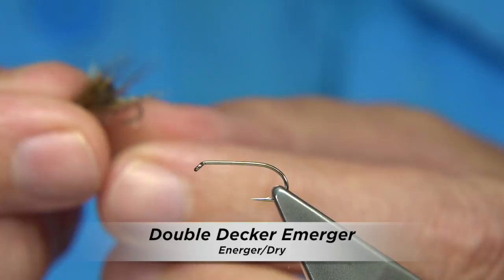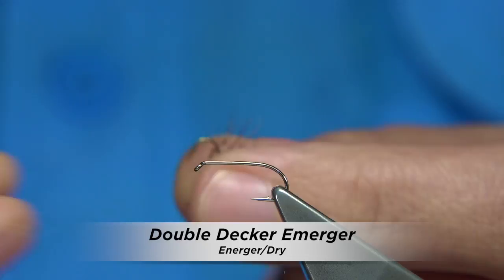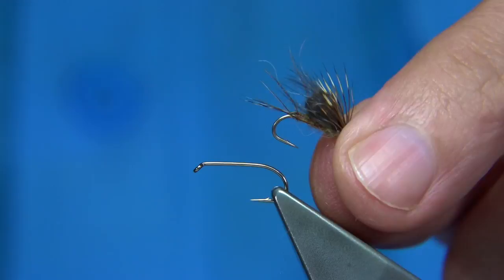Now, I'm going to be tying basically a double decker emerger. The double decker is like a Comparadun type fly that's fished in the Loch Leven area. Originally tied for the river,